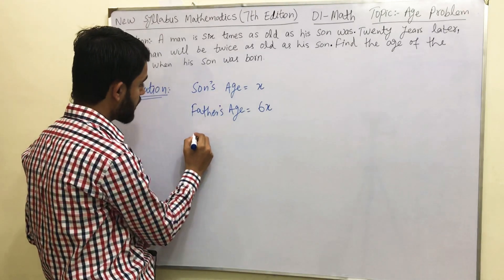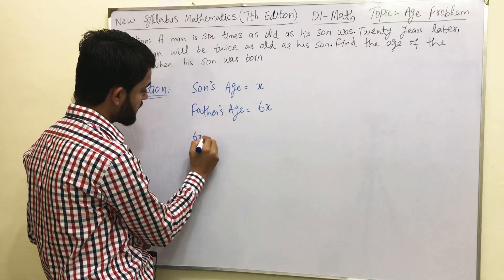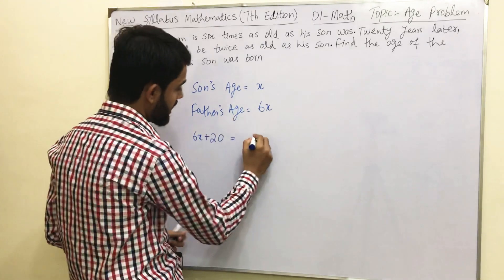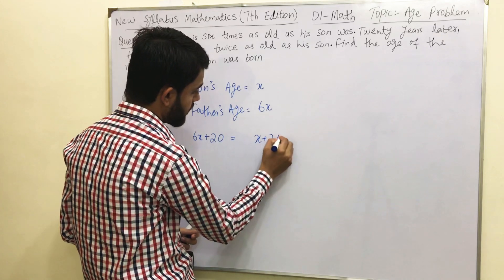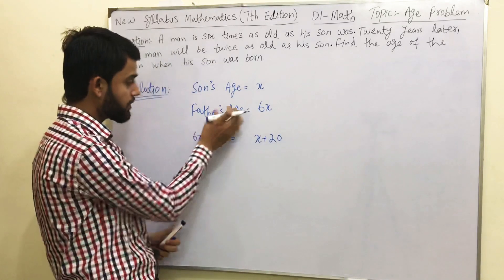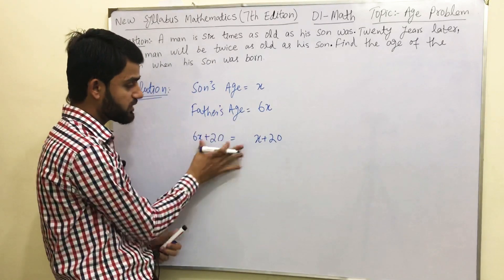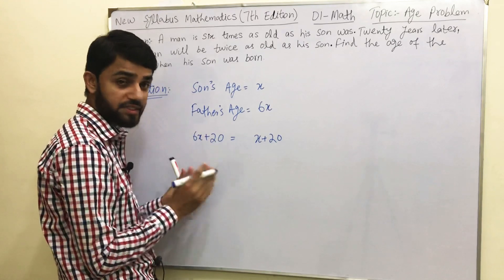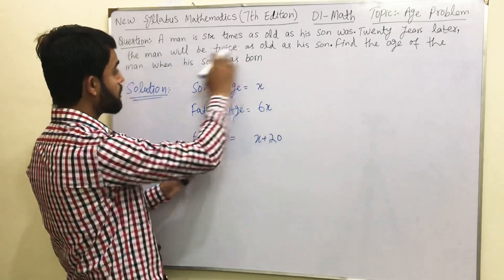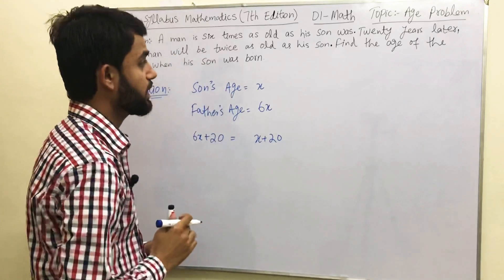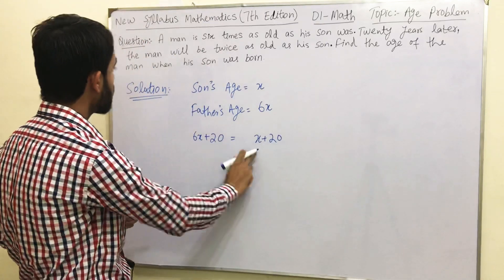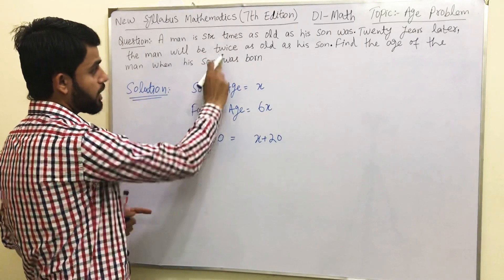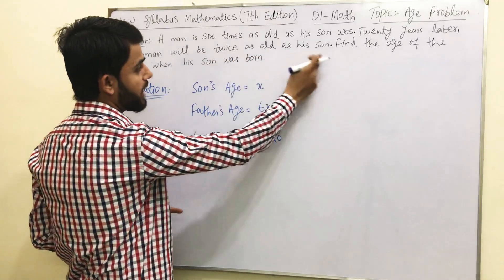According to the condition, after 20 years the father's age will be 6x + 20 and the son's age will be x + 20. So after 20 years, these are the ages that they are going to become. Now let's read the next condition: 20 years later the man will be twice as old as his son.